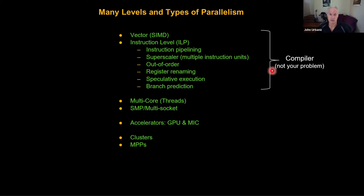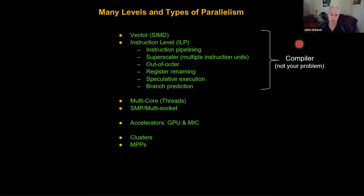Beyond vector instructions, processors today have a lot of tricky hardware built in to do things as parallel as possible — shuffling things out of order, renaming registers, even executing branches not yet taken just in case they are taken in the future. You hope the compiler and hardware do this for you. This stuff is so tricky that some of it is where major security flaws in modern processors have popped up — if you've heard of Spectre or Meltdown, this is why: the engineers' trickiness exceeded their foresight.